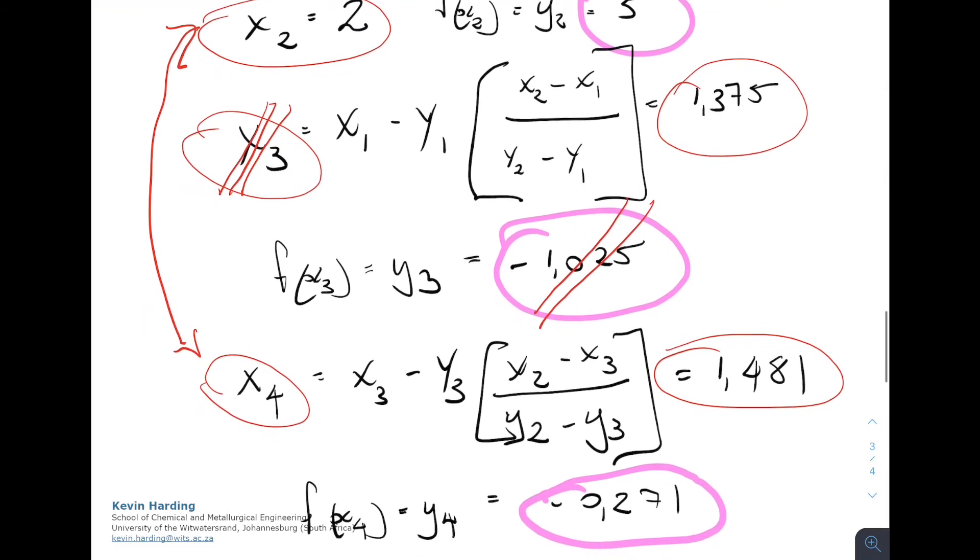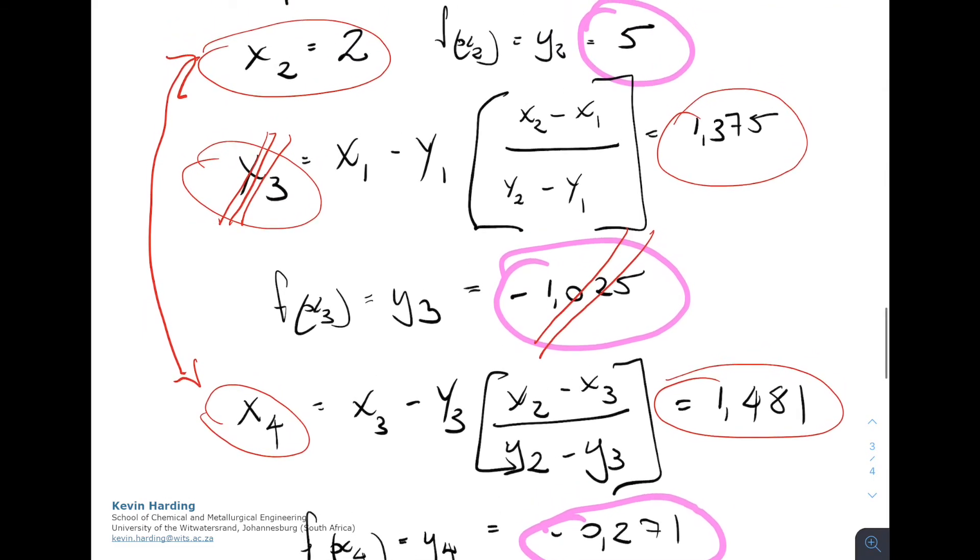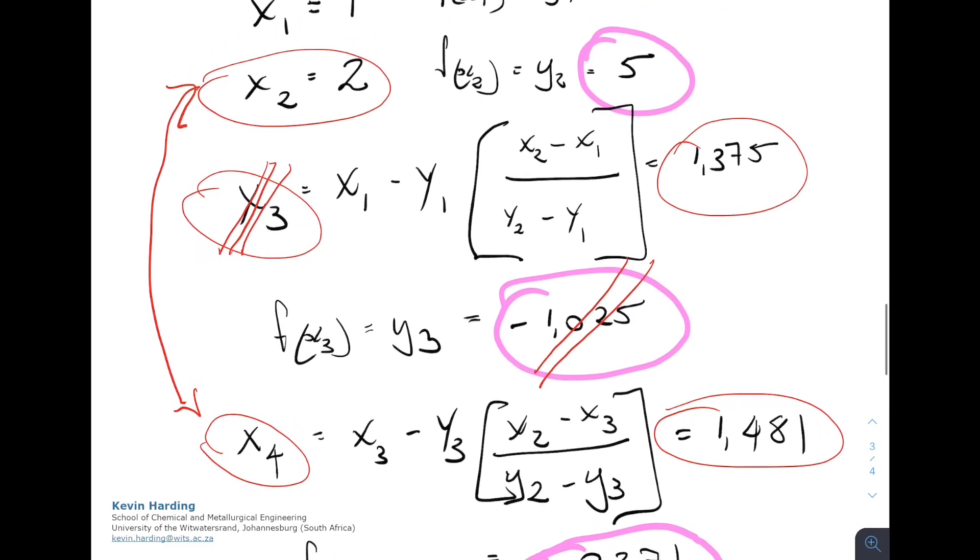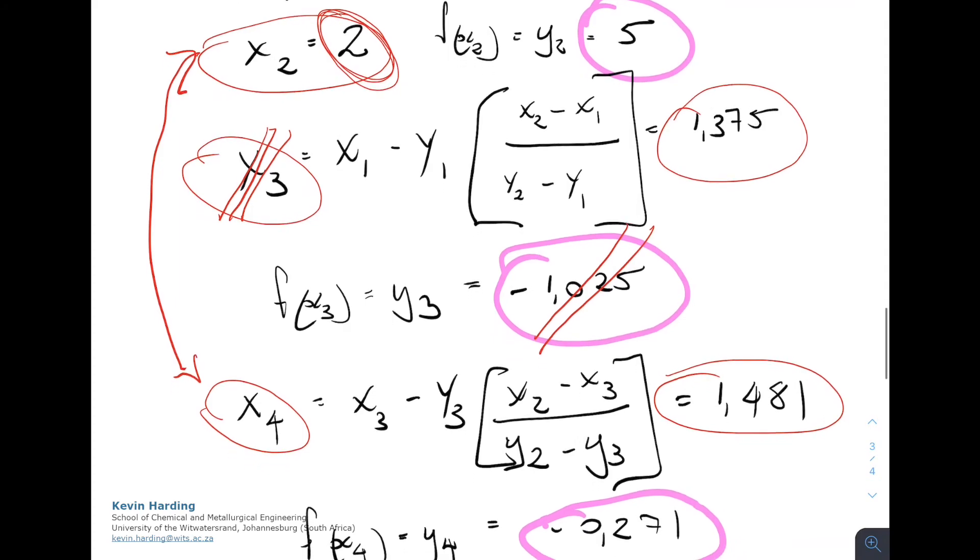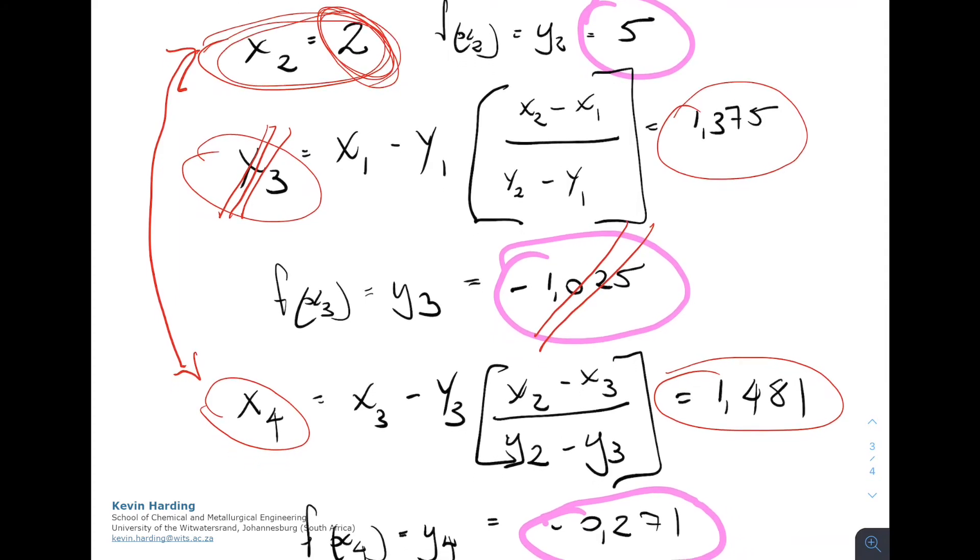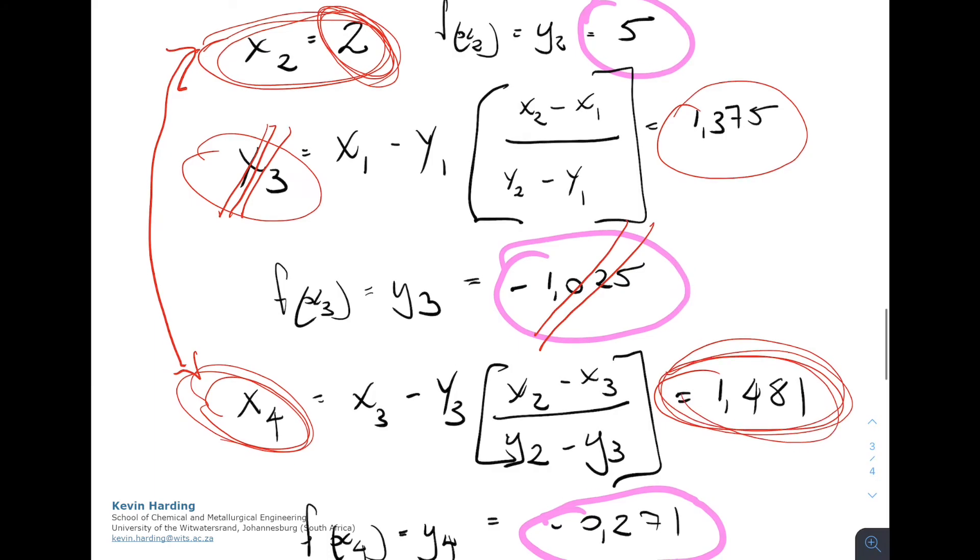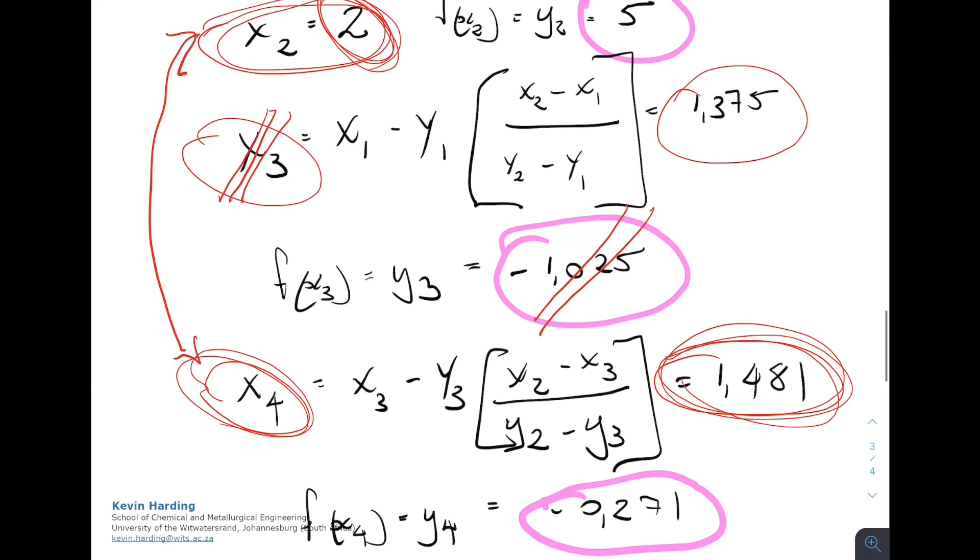Our solution is now lying between x2 and x4. So it lies somewhere between x2 of 2 and an x4 of 1.481. And now we must carry on doing this until we find a value that is close enough together to assume that that's our final root.